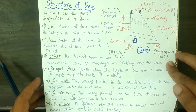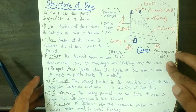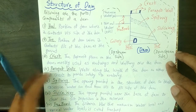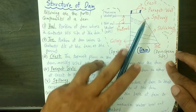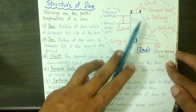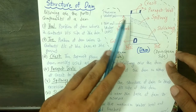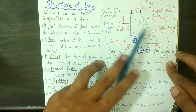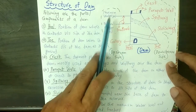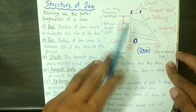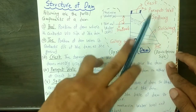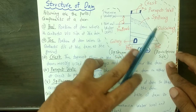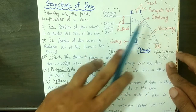Next is the concept of the spillway — the opening provided in the structure of the dam so that excessive water can flow from the upstream to the downstream side. This is our spillway, an opening from the upstream side to the downstream side. The entire left portion of the dam is the upstream side and the tail portion is the downstream side.